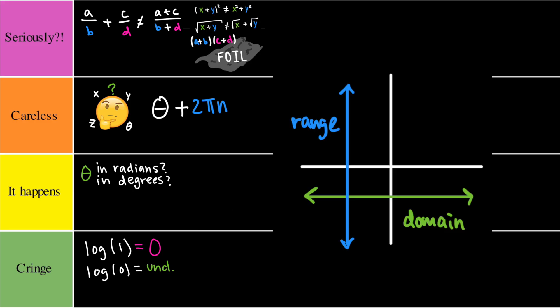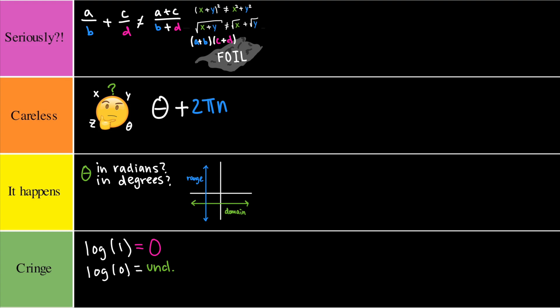Knowing the domain and range of a function. Now this one I understand because if you have a square root, sometimes that might be tricky. If you have a composite function that might be tricky. This would go into it happens tier, simply because the more problems you do, the more familiar you become with its domain and range.